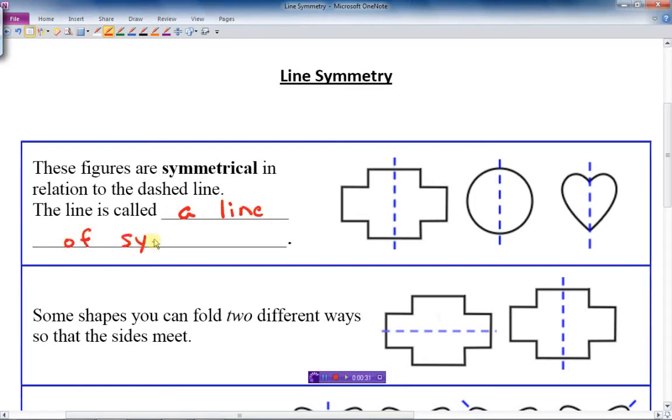...of symmetry. We use that expression, or we can call it a symmetry line. This means that one half of the figure is the mirror image of the other half. In other words, if I took and traced any of these three shapes onto a piece of paper and cut it out, if I folded it down the dashed line, the edges of both sides would match and it would be identical on both sides.